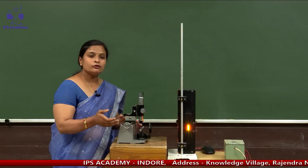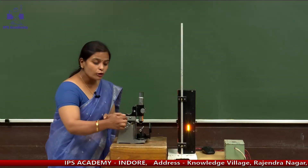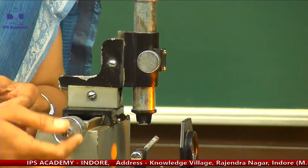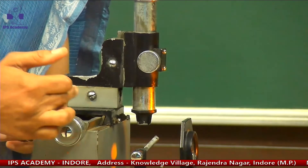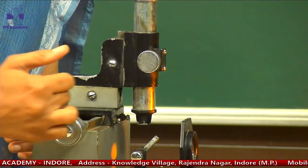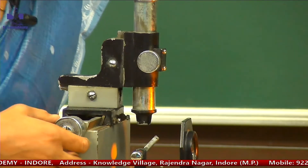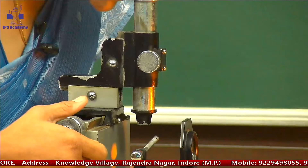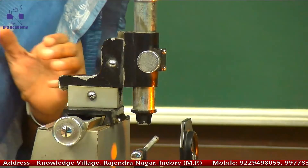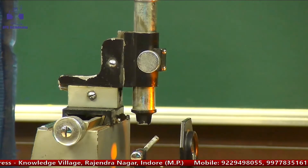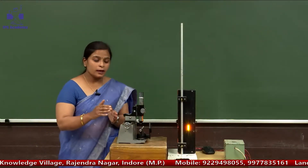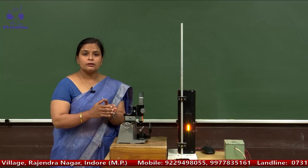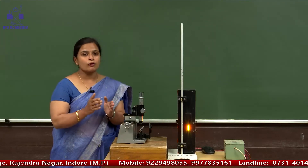Remember, you have to take a precaution here. Don't move this circular scale very fast. You have to rotate in a very simple manner and very slowly. If you move this in a faster way, you will observe the backlash error — any one ring can skip. It is not allowed and the reading will be wrong.